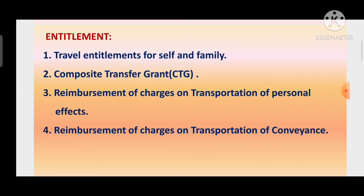Four benefits are: one is the travel entitlements for self and family - the retired employee himself or herself and family members are entitled for travelling allowance. Second, composite transfer grant (CTG). Third, reimbursement of charges on transportation of personal effects - जो भी उनका सामान है, उनका hometown को जाएगा और कोई settled place को जाएगा। Fourth, reimbursement of charges on transportation of conveyance - motor car, motorcycle, scooter - उसका transport के लिए भी reimbursement मिलेगा।